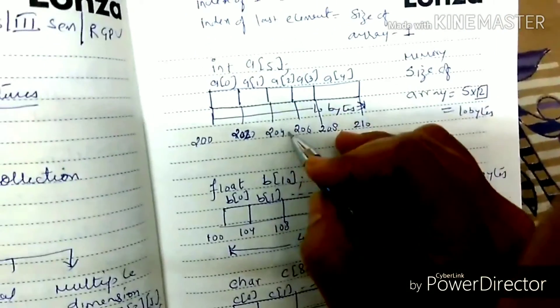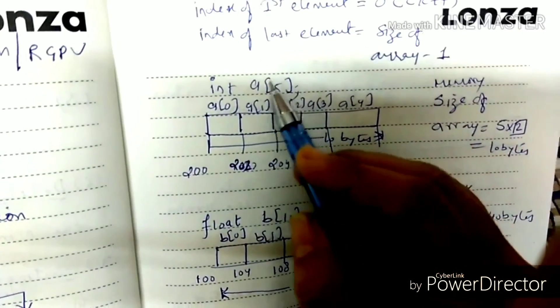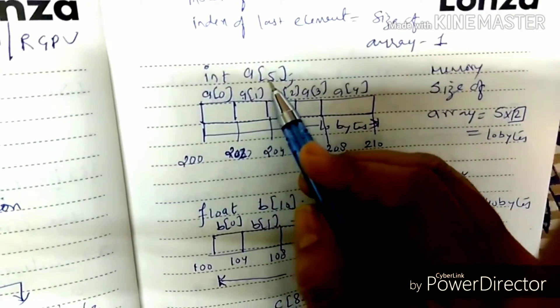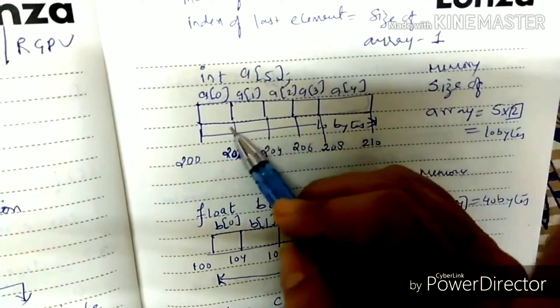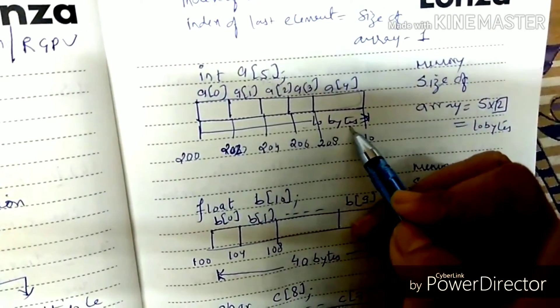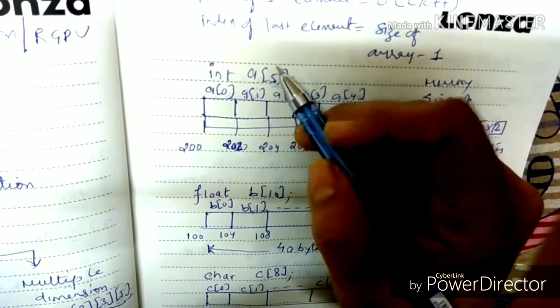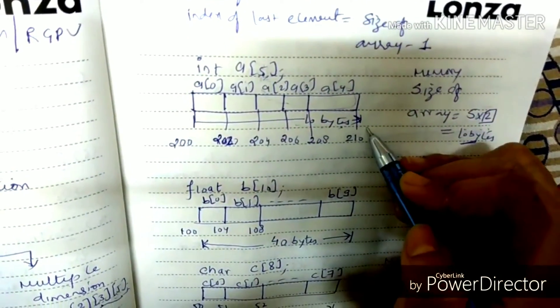Now, how do we allocate this to memory? If I write int A[5] with a semicolon, I have declared an array with name A to store 5 integers. The compiler will allocate 10 bytes. Why? Because 1 integer takes 2 bytes, so 5 into 2 equals 10 bytes.